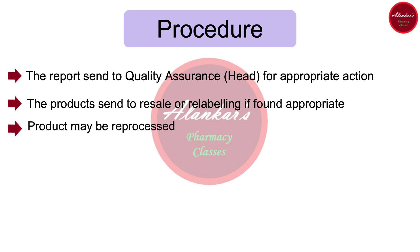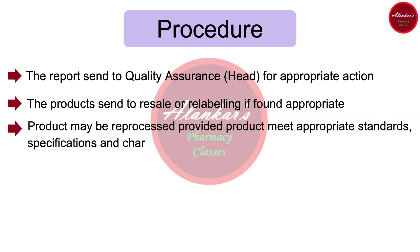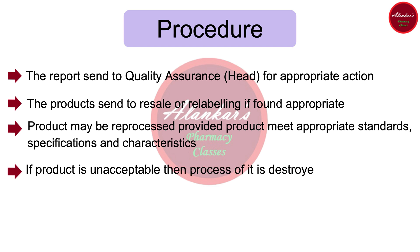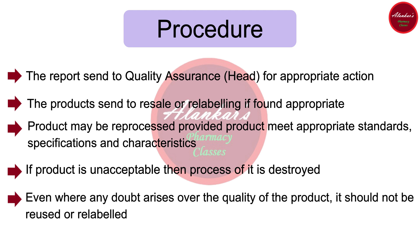If the product complies with all necessary standards, then the product is sent for resale or relabeling. If the product can be reprocessed further to comply with standards, the product is sent for reprocessing, provided it meets appropriate standards, specifications, and characteristics. Lastly, if the product fails all specifications — that is, it is an unacceptable product — then the product is destroyed. Even where any doubt arises over the quality of the product, it should not be reused or relabeled.